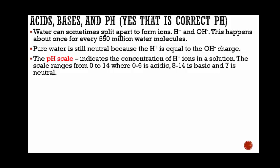The pH scale. This is how you write pH, lowercase p, capital H. The pH scale indicates the concentration of hydrogen ions in a solution. The scale ranges from 0 to 14, where 0 to 6 is classified as acidic, 8 to 14 is basic, and 7 is neutral.